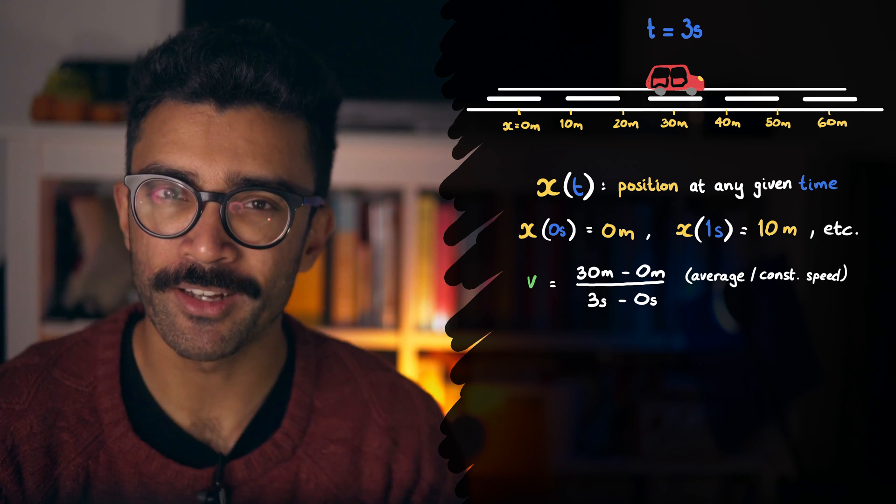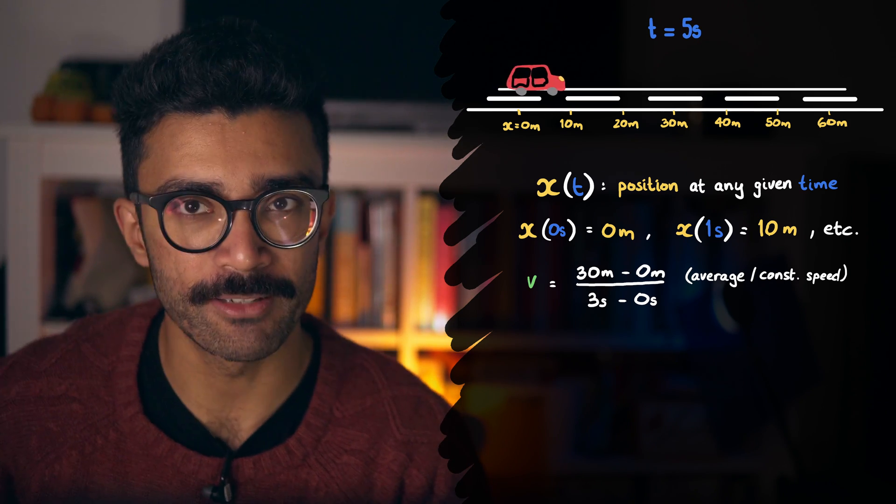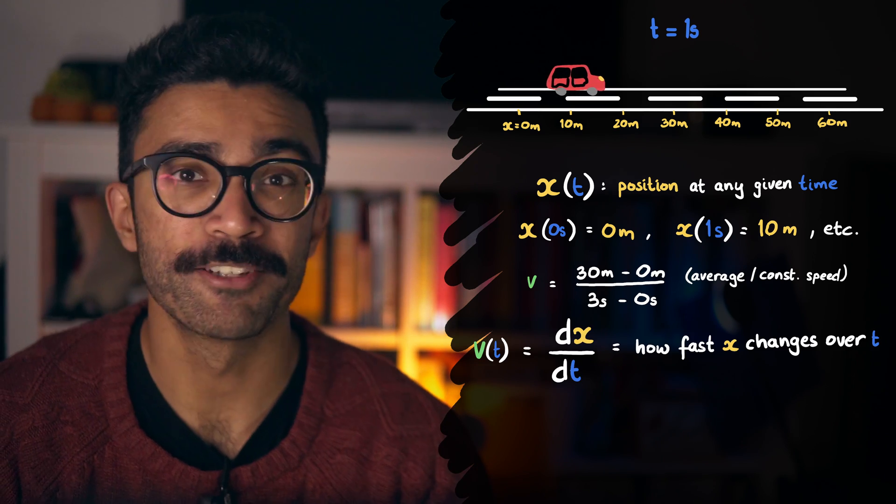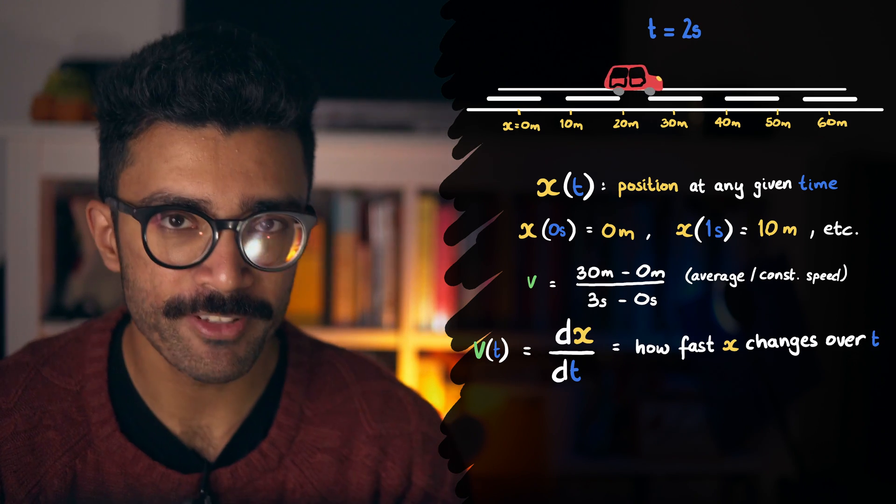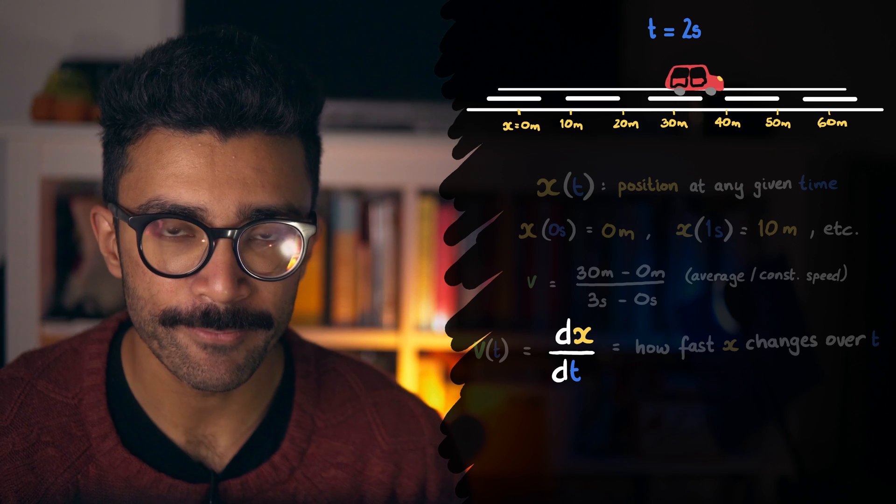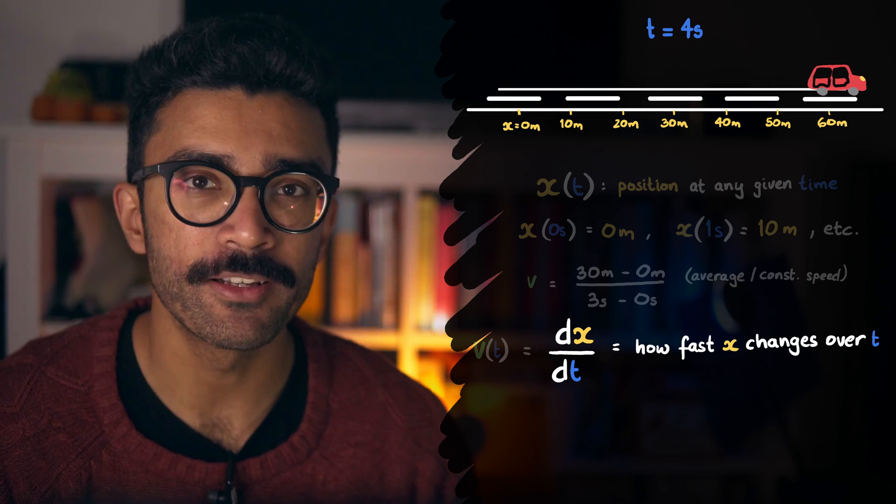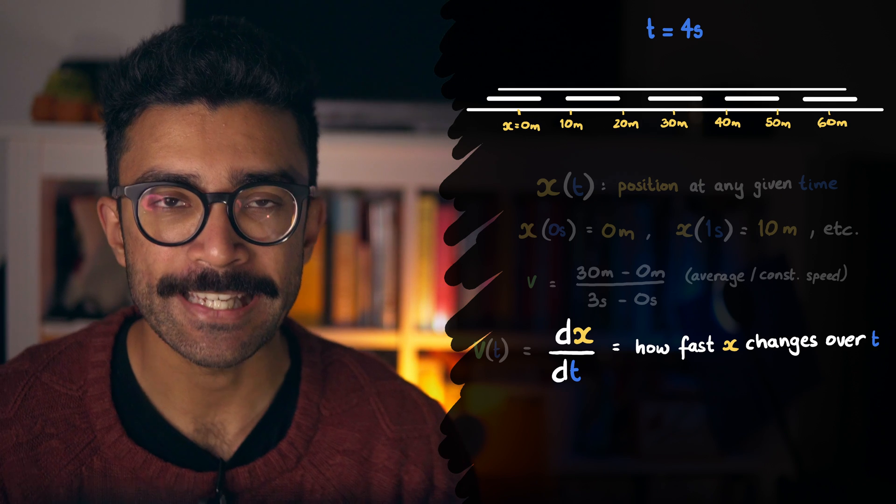So what do we do when the car is changing its velocity over time? Well, this is where our derivative comes in. The derivative, dx by dt, measures how quickly x, the position, is changing over the time t.